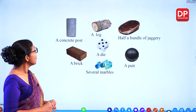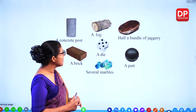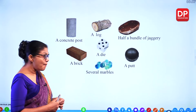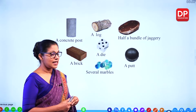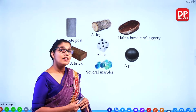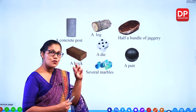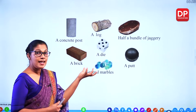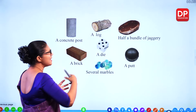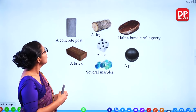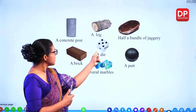Look at these shapes: a concrete post, a log, half a bundle of jaggery, a pot, a die, several marbles, and a brick. Those are all 3D shapes — we call these solids. Objects that have a definite shape. Marbles have a spherical shape, a die is a cube shape, and a concrete post looks like a cylindrical shape. We'll talk about the cube and cuboid shapes in this lesson.